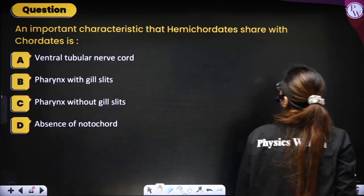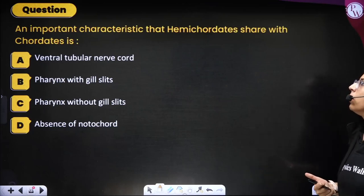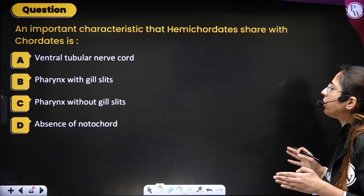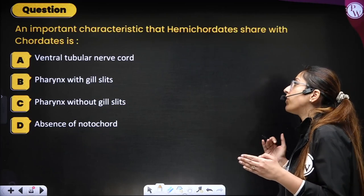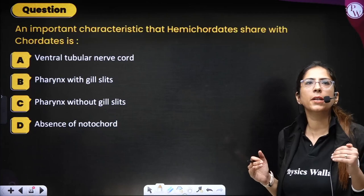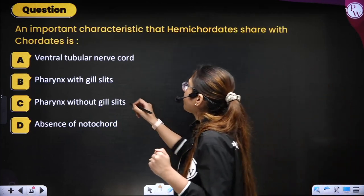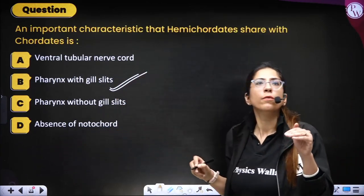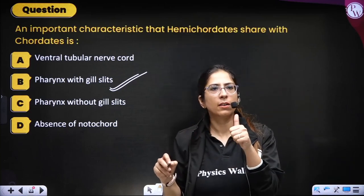Next question: an important characteristic that hemichordates share with chordates — ventral tubular nerve cord, pharynx with gill slits, pharynx without gill slits, or absence of notochord. The correct answer is pharynx with gill slits — this is the characteristic shared by hemichordates and chordates.